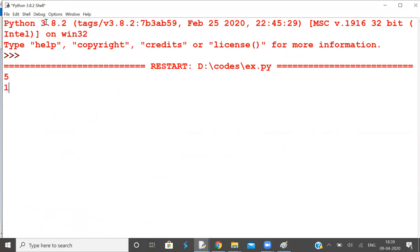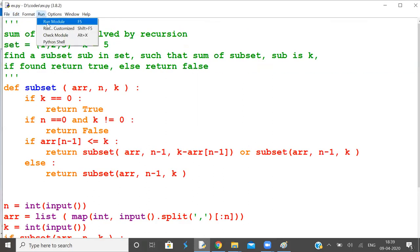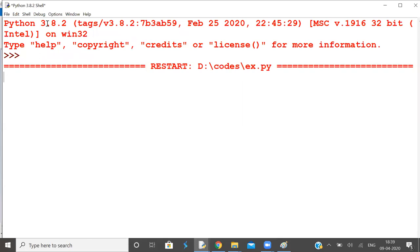So five inputs: 1 comma 2 comma 3 comma 4 comma 5. The sum is 11. Can we make 11? 5, 4, 9, 2, 1 - yes we can make. Now, can we make 8? 4, 2, 1, 7, 5, 3, 8 - yes we can make. Can we make 14? 5, 4, 9, 10 - yes. Can we make 16?